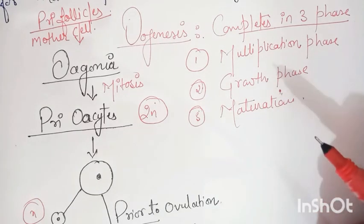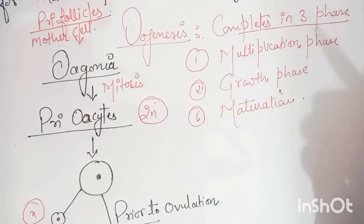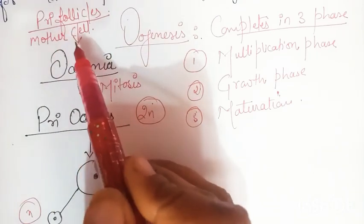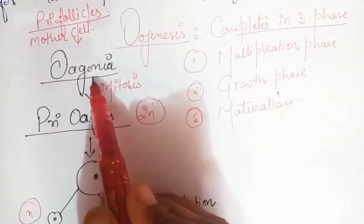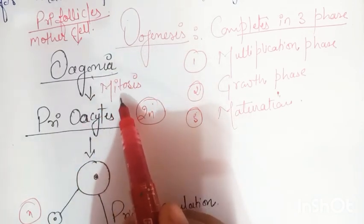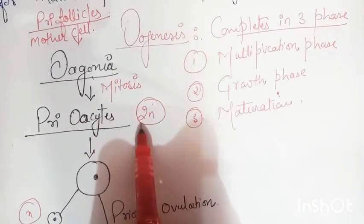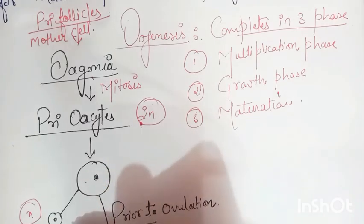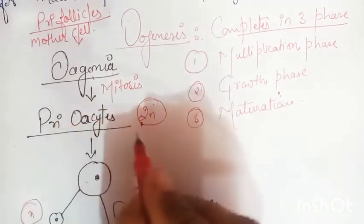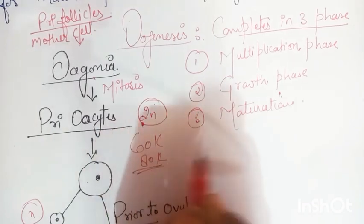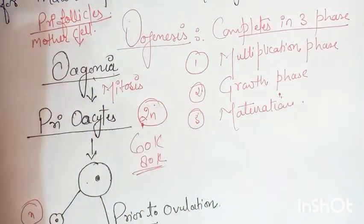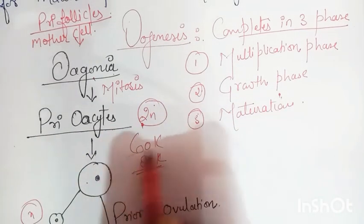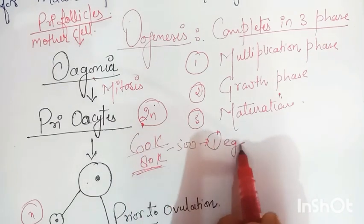Let's start with the primary follicles or mother cells, which are 60,000 to 80,000. From these, out of each 500 primary follicles, only one is converted into egg.